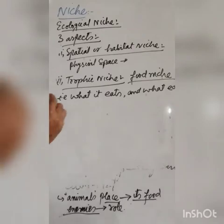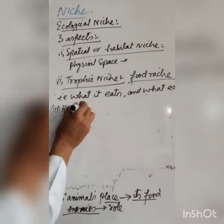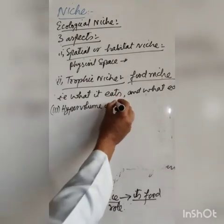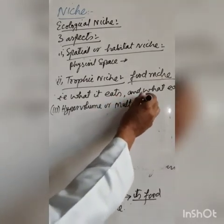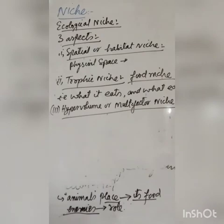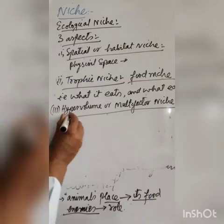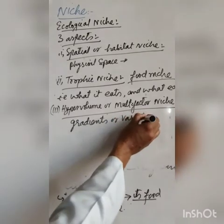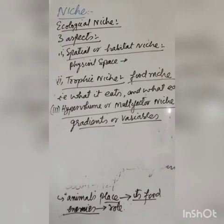The third aspect is the hypervolume or multi-factor niche. It refers to the position of an organism in environmental gradients or variables — which place it occupies in a habitat or ecosystem.